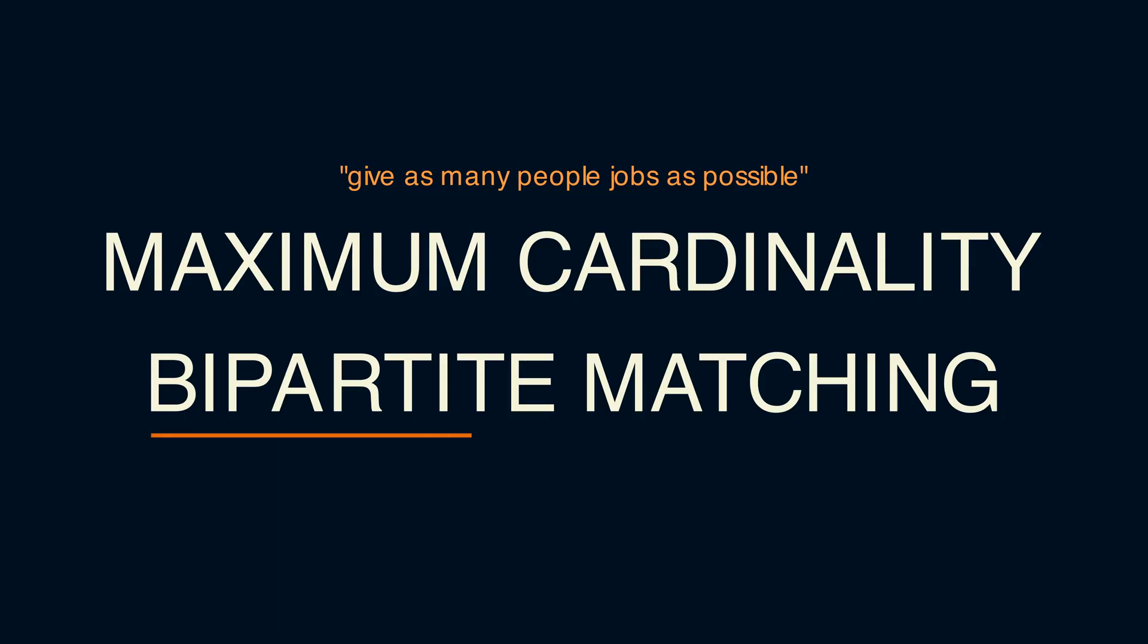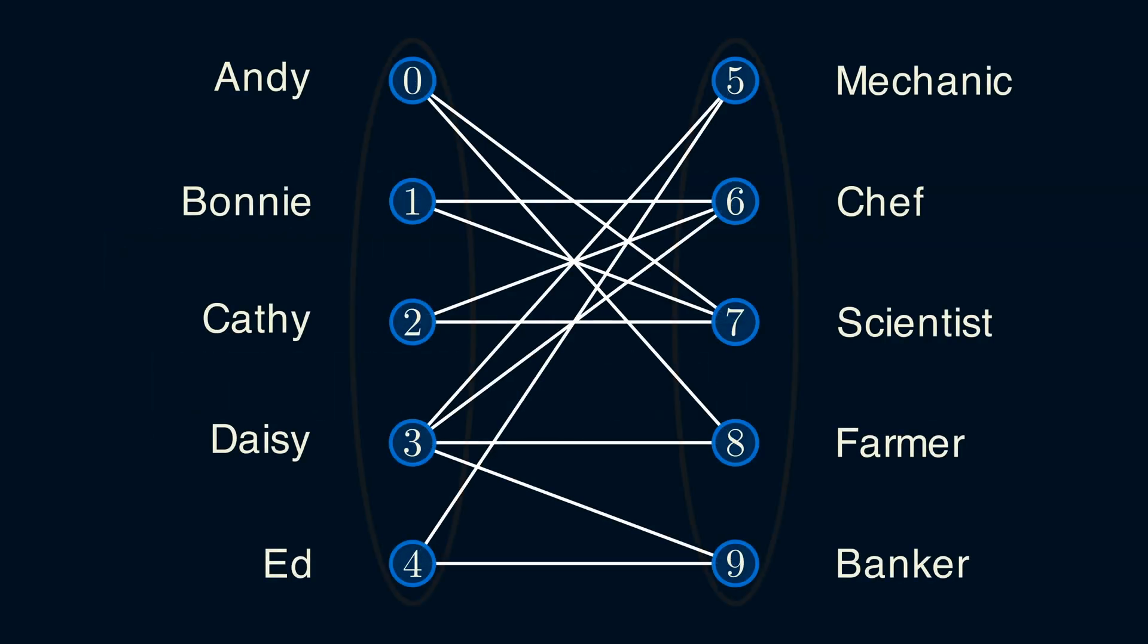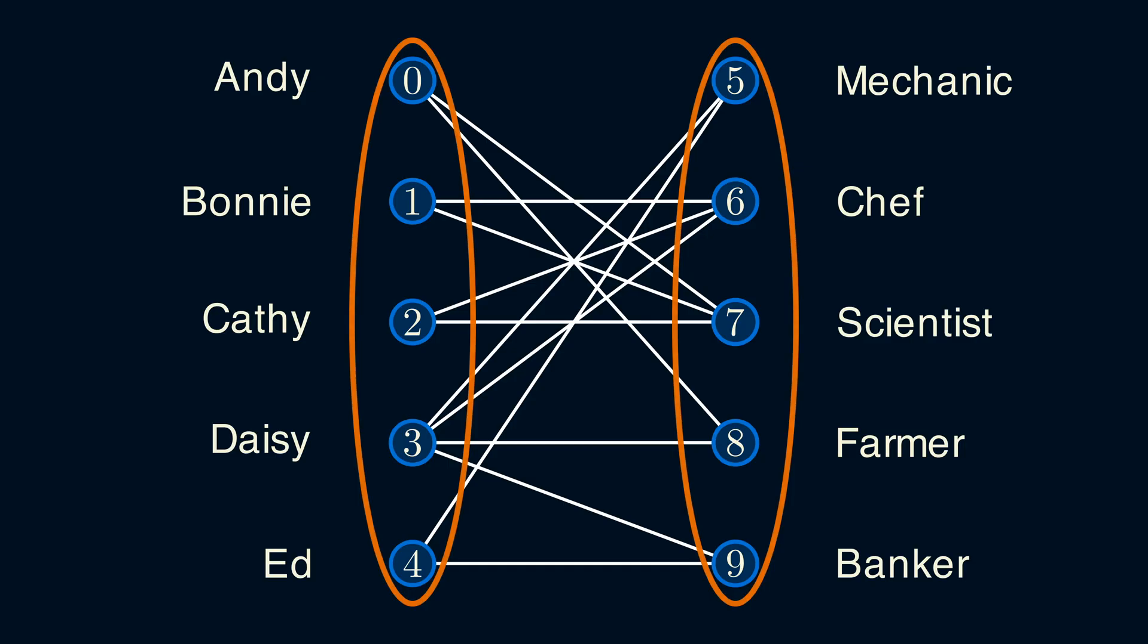Bipartite is a special type of graph which makes finding the largest matching much easier. In a bipartite graph, the vertices can be divided into two sets where there are no internal edges in each set. So our example here is a bipartite graph.